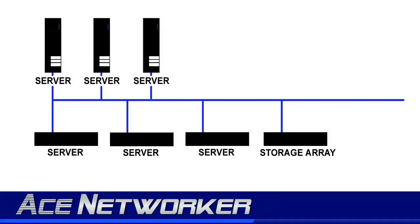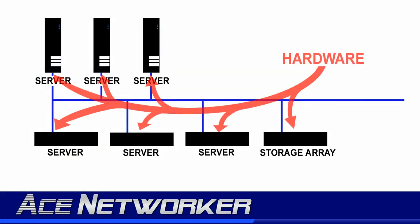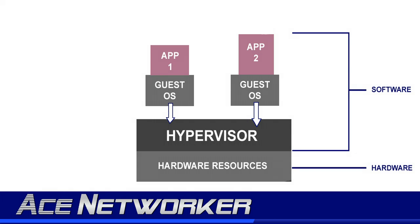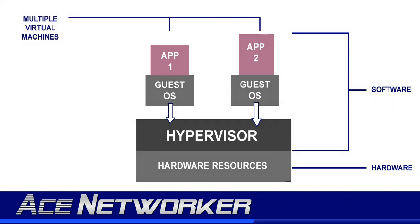In simple terms, when you virtualize something you're moving away from having a hardware component for each thing or process you need on your network, to having it virtualized using software. In computer networking virtualization, you're using software in a special class of programs called hypervisors and virtual machine managers to create an environment where an operating system can perform as if it's installed on its own computer.